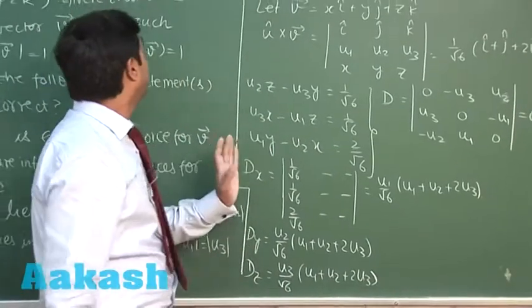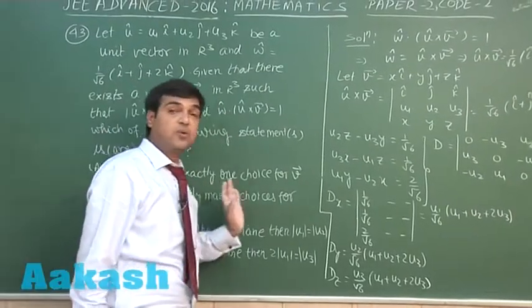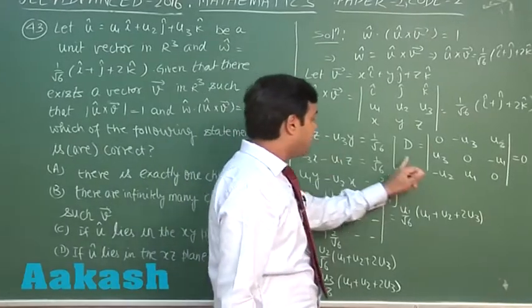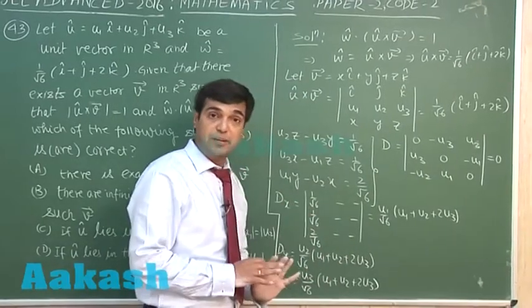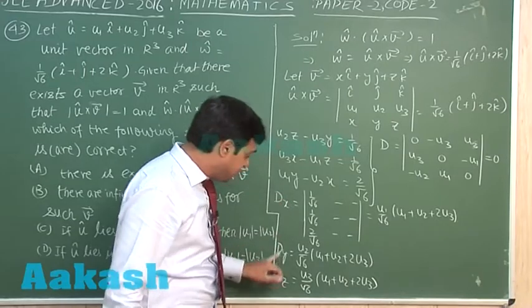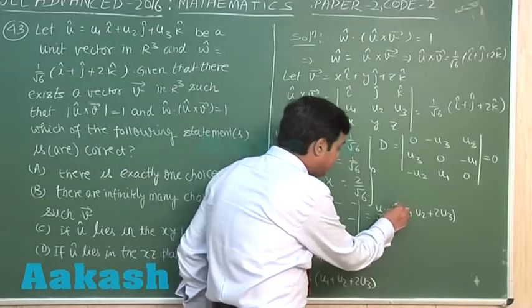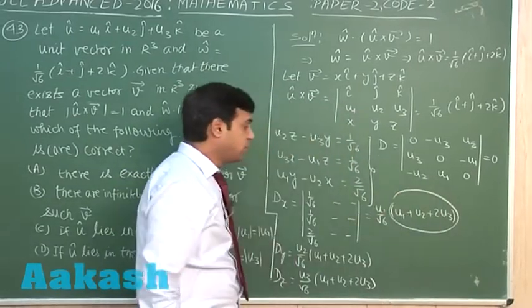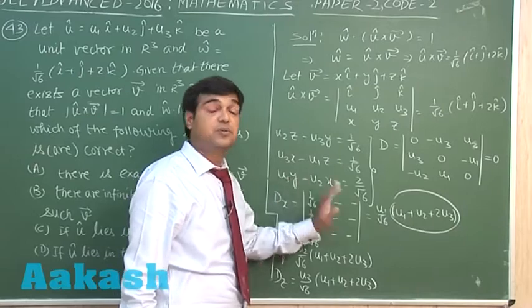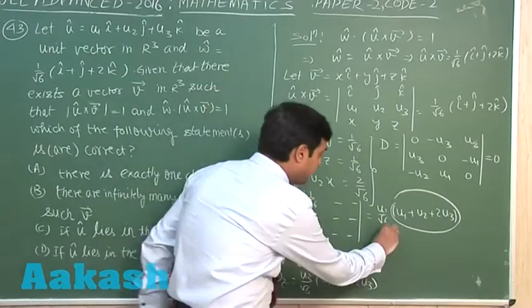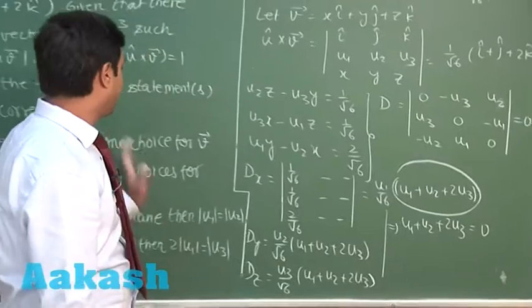Since it is given that there exists a vector v — meaning no-solution is not possible — and the determinant D = 0, the only possibility is infinitely many solutions. For infinitely many solutions, Dx, Dy, Dz must all be 0 simultaneously. The common factor is (u1 + u2 + 2u3). Since u-cap is a unit vector and non-zero, we must have u1 + u2 + 2u3 = 0.